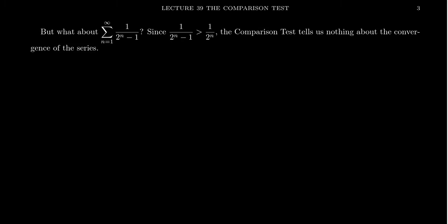In our previous video we learned about the comparison test and we saw how we could use the comparison test to determine the convergence or divergence of what we'll call a messy series — a series whose sequence has a bunch of extra stuff floating around that we want to ignore and simplify. We were able to compare it to a simpler series, like a p-series or geometric series, for which convergence is much easier to ascertain, and then infer the convergence or divergence of the messy series.